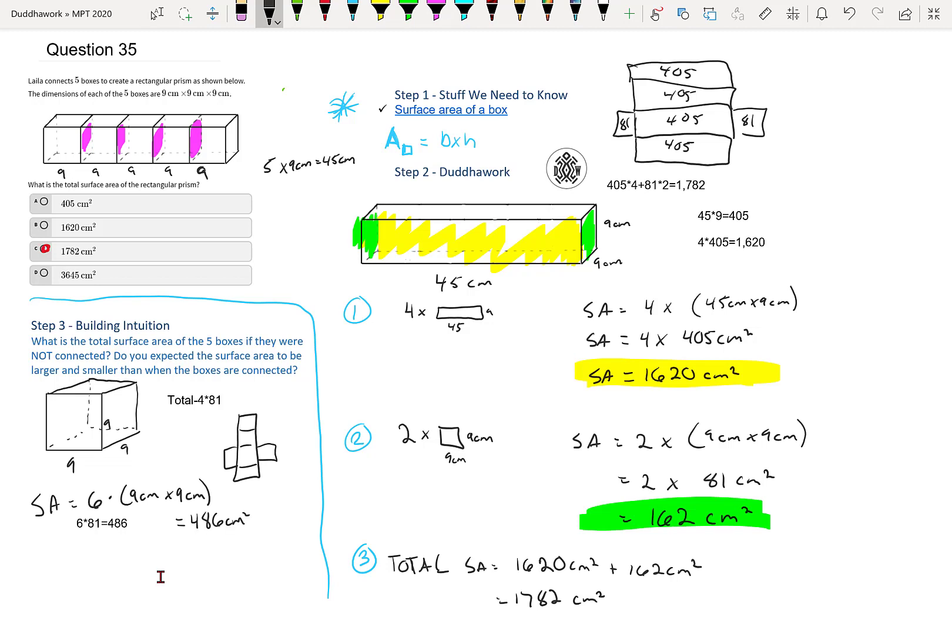So that's 486 centimeters squared. So that's for one box, right? So the total surface area, unconnected, is you have 5 boxes. So 5 times 486 centimeters squared. And then that's 2,430. That's 2,430 centimeters squared. It is greater, which makes sense.